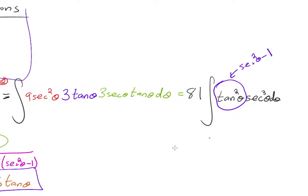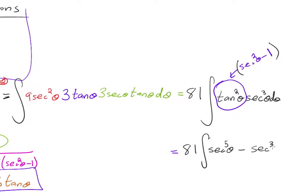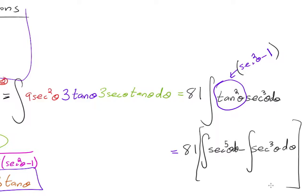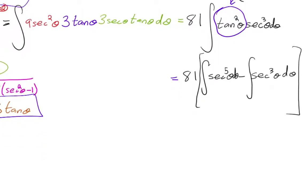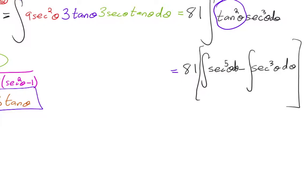We split this into two integrals. Our best strategy is to use the reduction formula on secant to the fifth — the result will include a secant to the third term that we can combine with the minus secant-cubed integral.